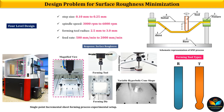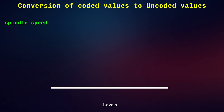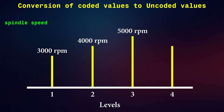Our main aim is to minimize the surface roughness so that parts manufactured by this process have good surface quality and finish. The design problem considers four input factors with a four-level design: vertical step size, spindle speed, forming tool radius, and feed rate. A four-level design means each input factor is divided into four values based on upper and lower limits. For example, spindle speed ranges from 3000 rpm (level 1) to 4000, 5000, and 6000 rpm (level 4).